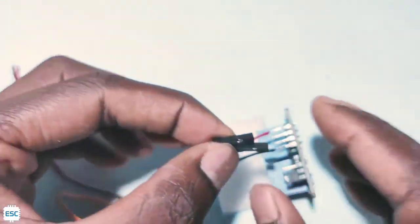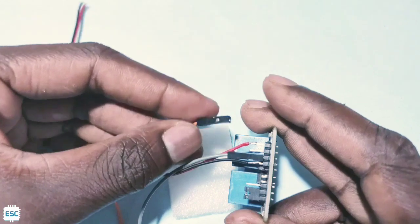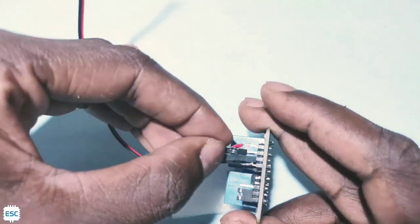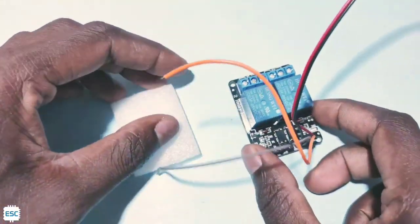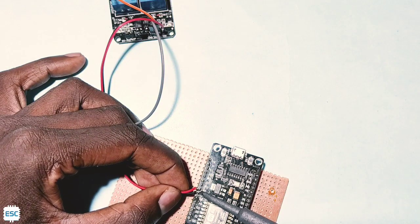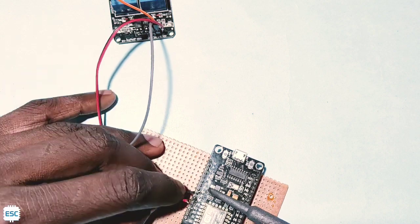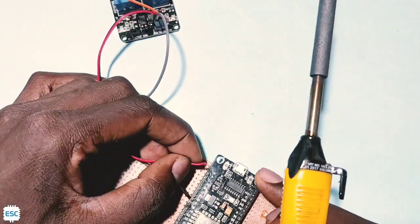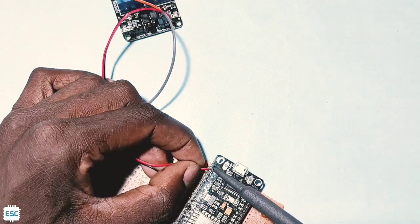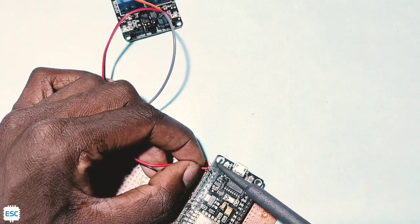Then I connected two female headers to the relay module inputs. That's the connections of relay module. In the other end I connected ground to ground, VCC to 3 volt, and two inputs to D2 and D4.